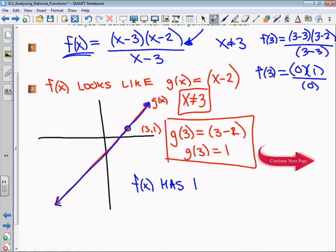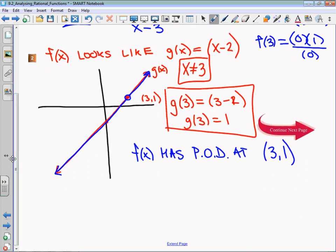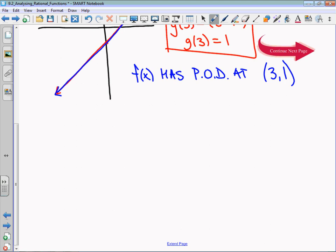f(x) has a point of discontinuity at - we now know the entire point - it's at (3,1). Now it says analyze its behavior near its point of discontinuity.